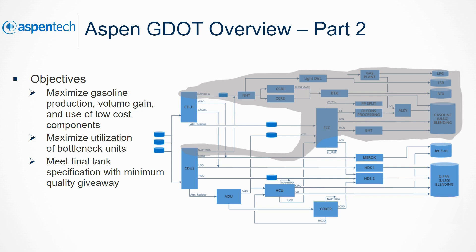GDOT uses simplified reaction models and shortcut distillation, or a proprietary high-level model similar to a planning linear programming model. GDOT controls these units to maximize gasoline production, volume gain, and use of low-cost components, to maximize utilization of units that are production bottlenecks by optimizing composition and feed quality, and to meet final tank specification with minimum quality giveaway by considering current tank quality and volume, or by managing blend component tank quality and inventory.